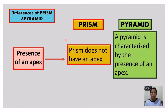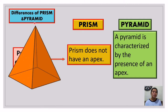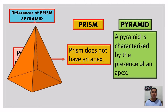A pyramid is characterized by the presence of an apex. So the difference is: a prism has no apex, while a pyramid has one. As I said, the four sides of a pyramid meet at one point — that is called the apex, or the top. The shape at the bottom is the base, and the shapes on the sides are the faces.